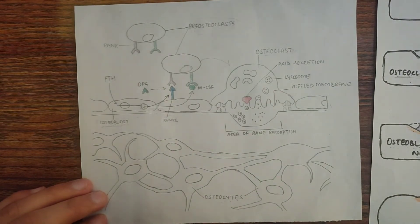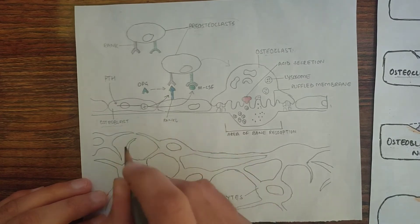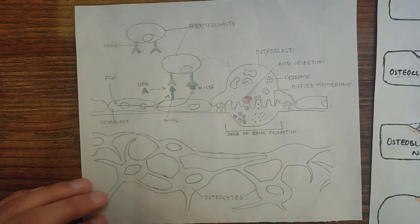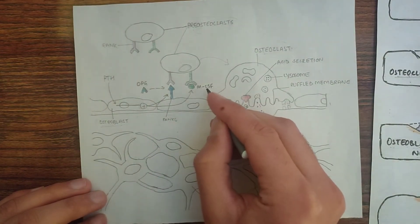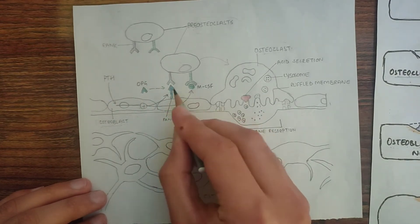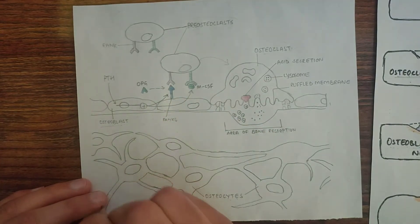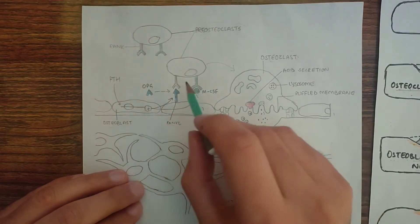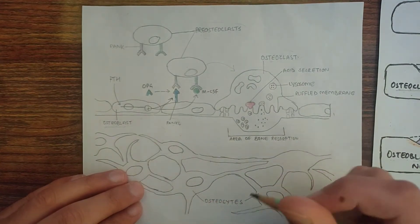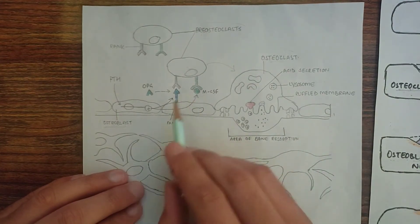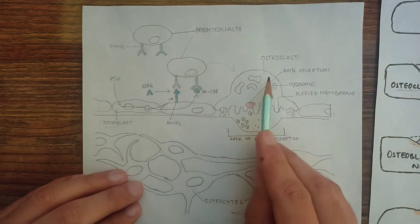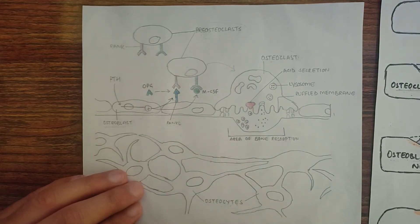So what are these two proteins? These two osteoblast proteins are: first, RANKL — that means receptor activator for nuclear factor kappa beta ligand — and second is the macrophage colony-stimulating factor. These are the two osteoblast proteins which are responsible for the signaling, and the signal is the transformation of pre-osteoclast into mature osteoclast.